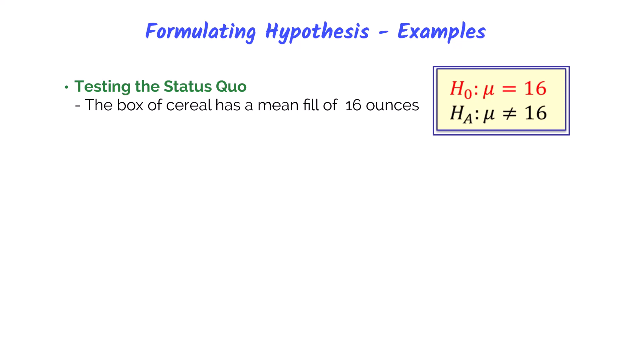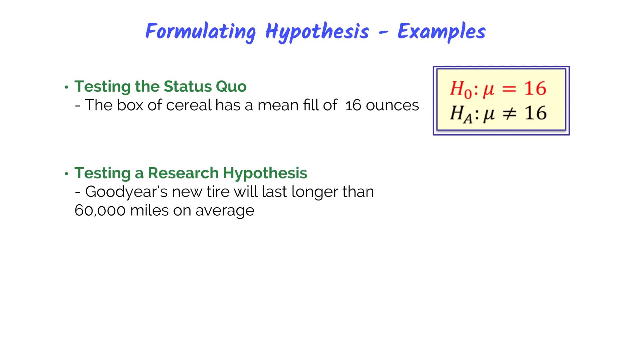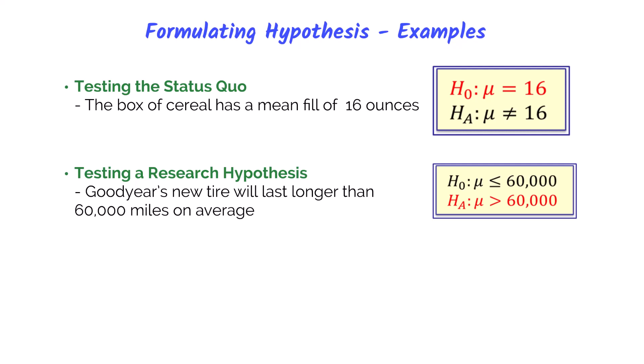Another purpose for hypothesis testing is to test a research hypothesis, often related to new product development where the decision maker wants to demonstrate something to be true. For instance, Goodyear wants to declare that its tires will last longer than 60,000 miles on average. The research hypothesis is the alternative hypothesis because Goodyear must find evidence to prove it true, whereas the null hypothesis states that Goodyear's tires last less than or equal to 60,000 miles. If the alternative is true, it's a win for the new product.